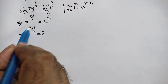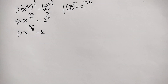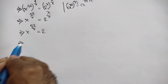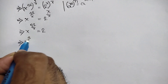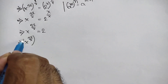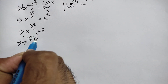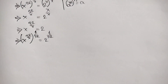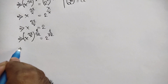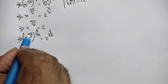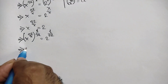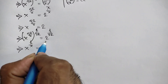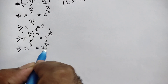Now we remove this 32. So multiplying both sides by 1 over 32, we can write x to the power 32 over x, whole to the power 1 over 32, is equal to 2 to the power 1 over 32. Now this 32 cancels out this 32, so we get x to the power 1 over x is equal to 2 to the power 1 over 32.